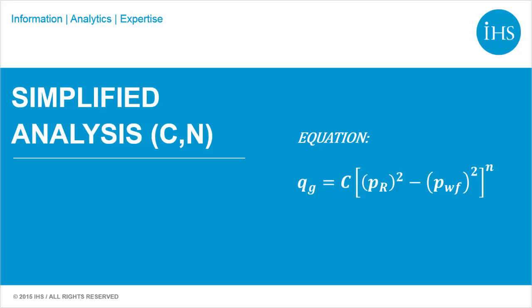Therefore, if we have production data, then we have a current gas rate and pressure combination. Furthermore, it should be known what the approximate reservoir pressure is for the well. Finally, if we assume an n value, then we can calculate C.